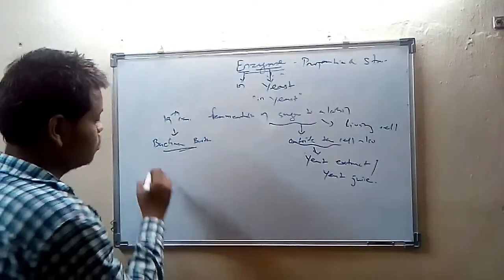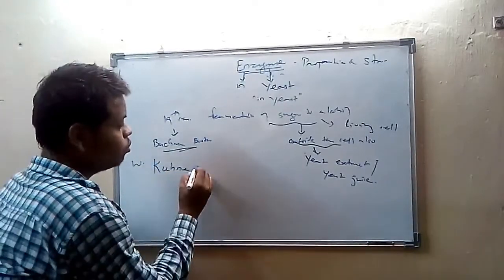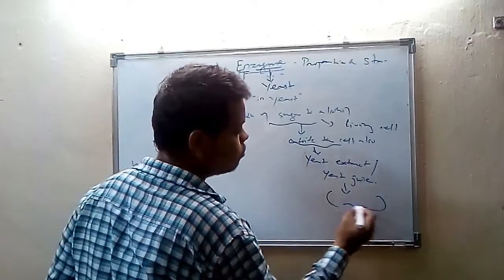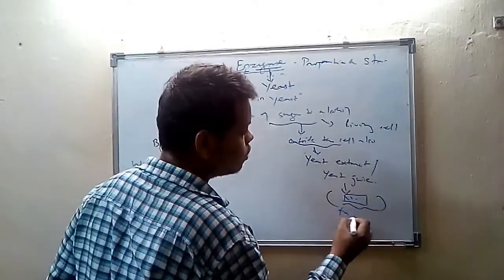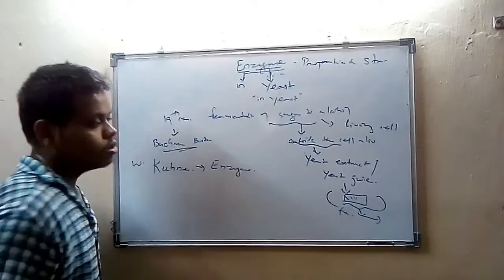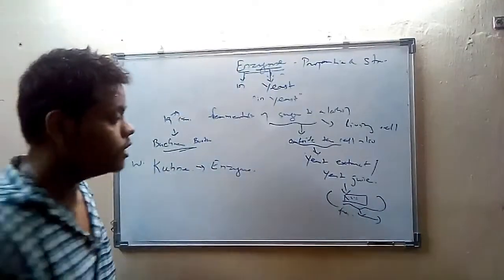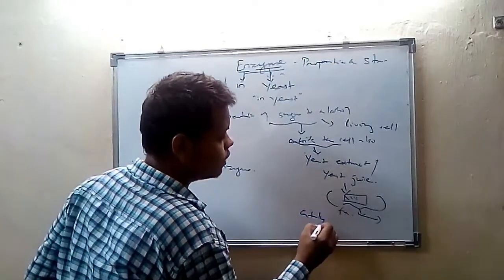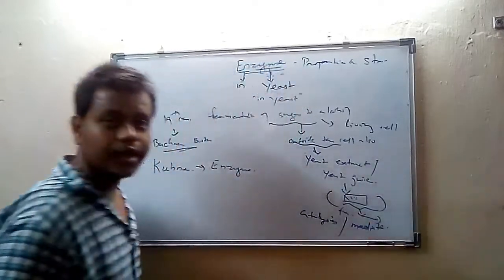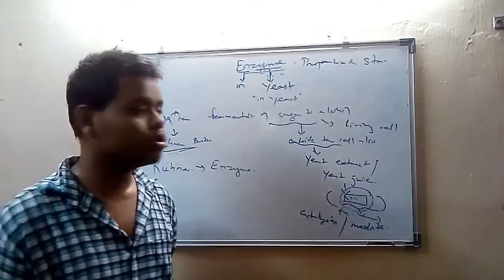From this experiment, scientist William Kühne — K-U-H-N-E — named the agent present in this yeast juice which helps in the fermentation. He named this agent 'enzyme.' The main function of this agent is that it catalyzes or mediates the fermentation process. This agent present in the yeast juice is nothing but the enzyme.